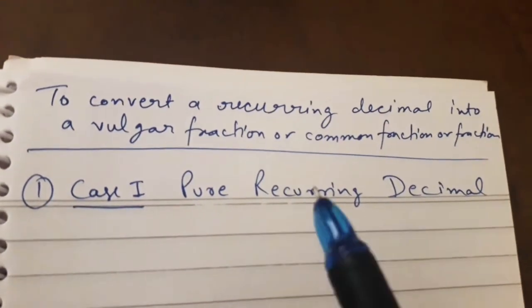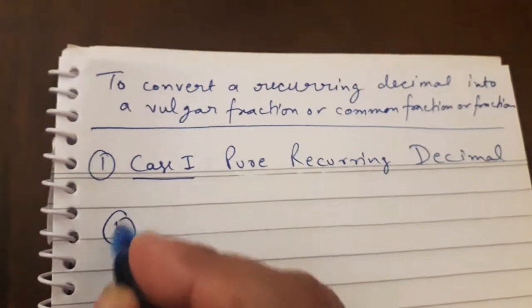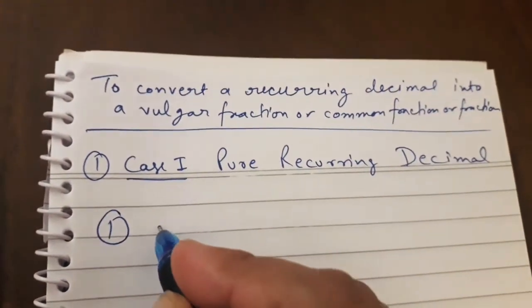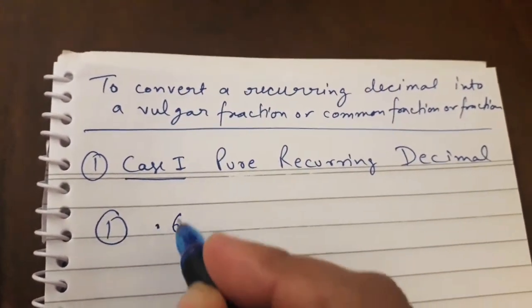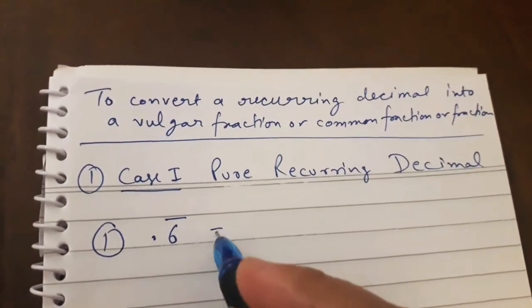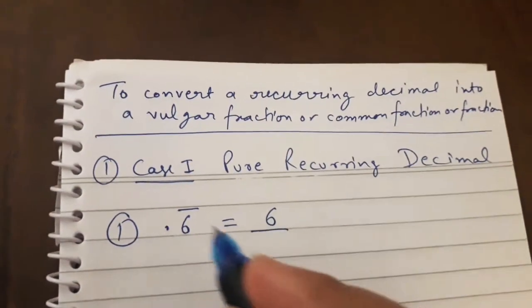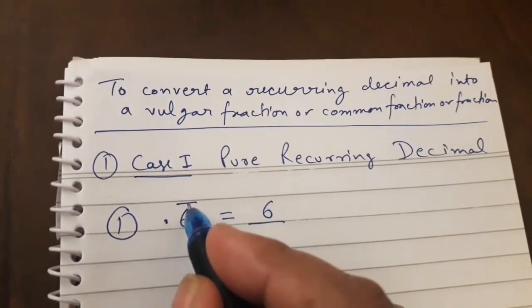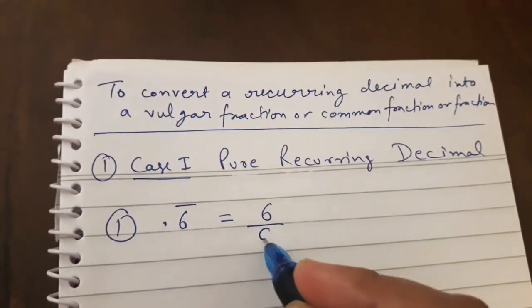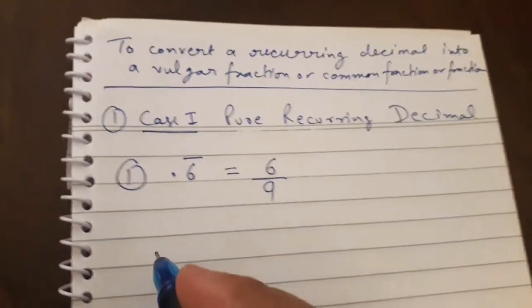How to convert them into a fraction? Let's see. For example, let's take 0.6 recurring. How can you write it directly? You write the digit 6. How many recurring numbers are there? Only one. So you just write one nine in the denominator. This is the fraction — 6 over 9.